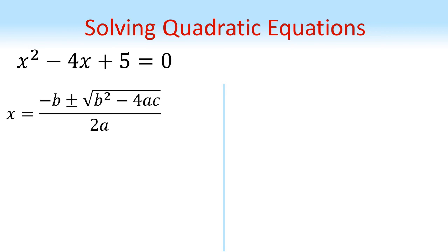We can see that a is equal to 1, because we just have x squared, b is equal to negative 4, and c is equal to 5. So substituting those values in gives us this.